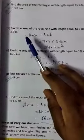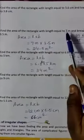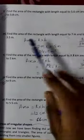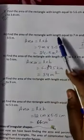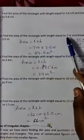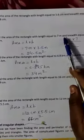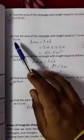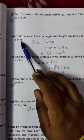Next, problem M. Find the area of the rectangle with length equal to 7 m and breadth equal to 3.5 meters.